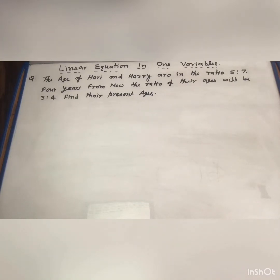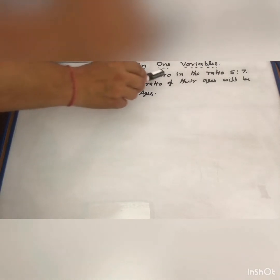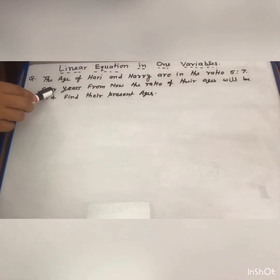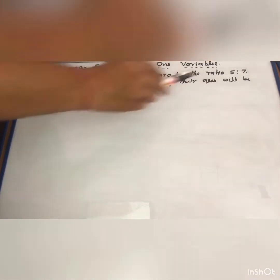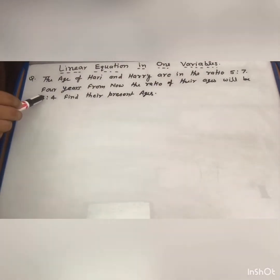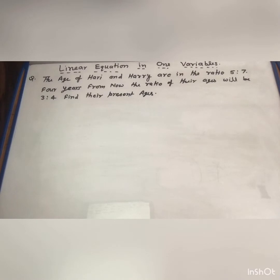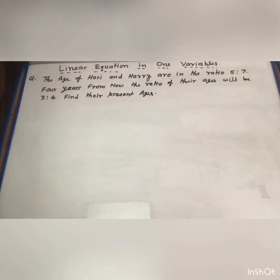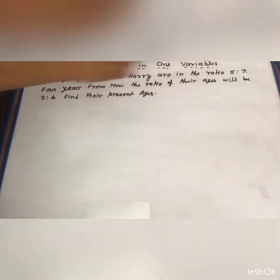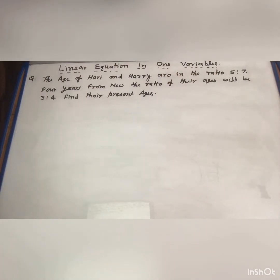Let me take the first question. The age of Hari and Harry are in the ratio 5 to 7. Four years from now, the ratio of their ages will be 3 to 4. Find their present ages. Here the requirement is to find their present ages of Hari and Harry, and only the ratios are given.